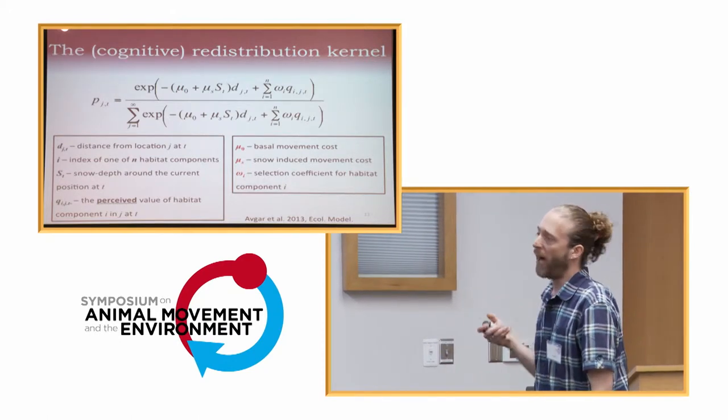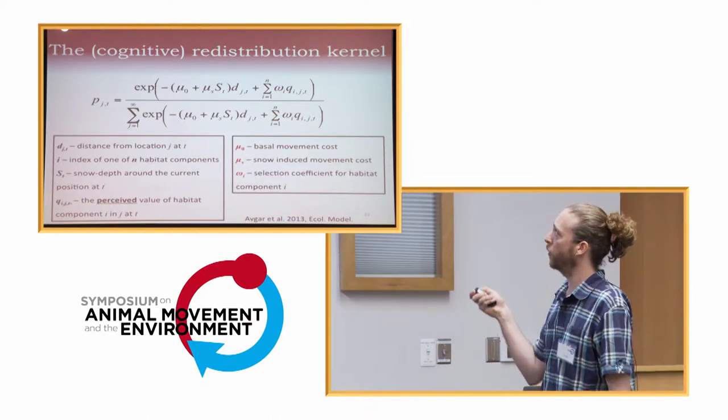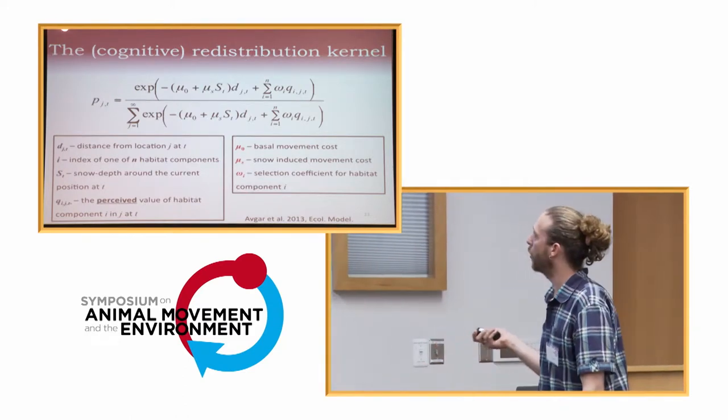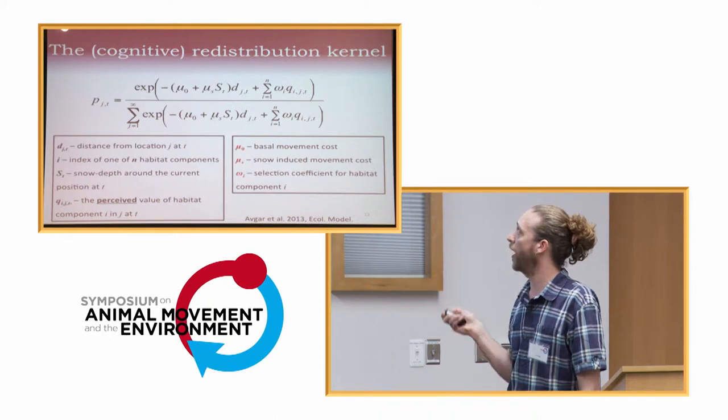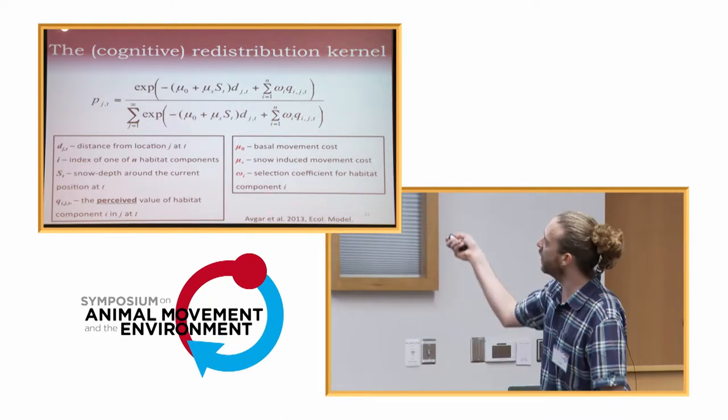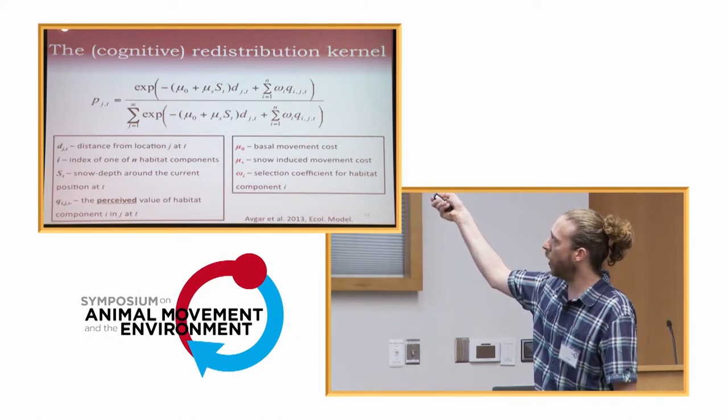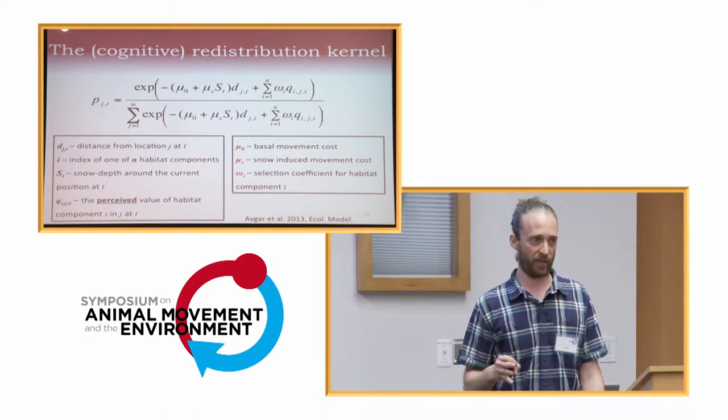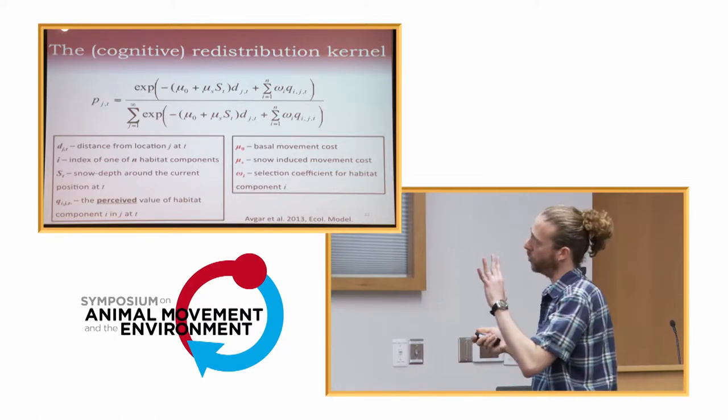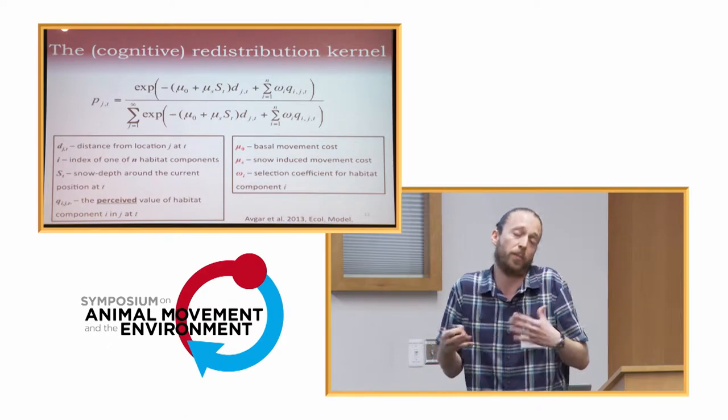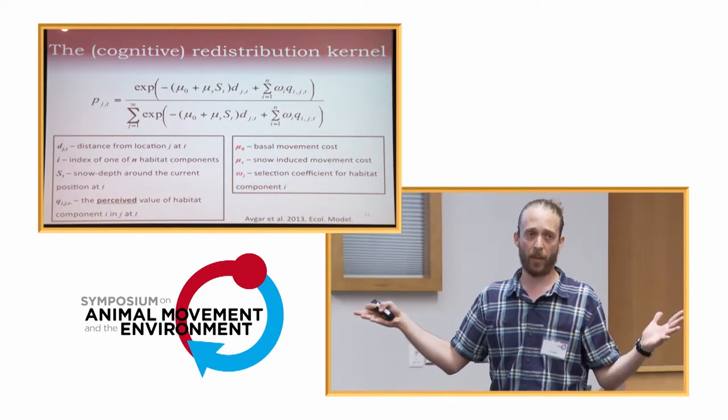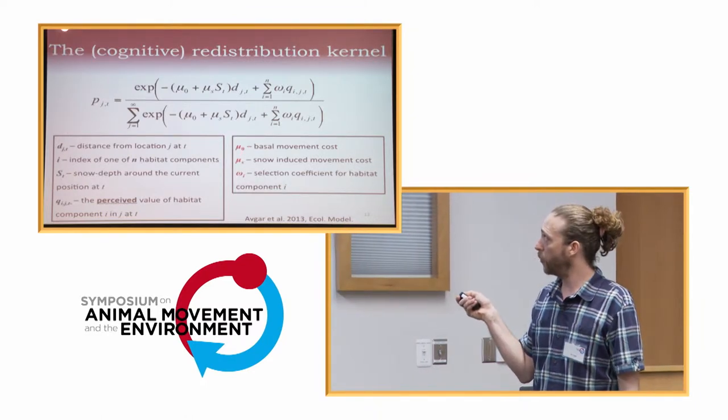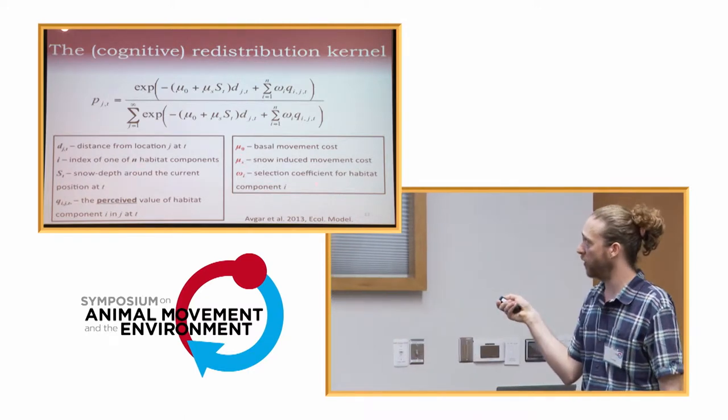And that probability is a function of a non-cognitive or non-resource or non-habitat-related movement kernel, which we think has two main components to it. It has a basal movement capacity. That's a parameter of the model. And it has the snow depth effect. We expect animals to move more slowly through deep snow because of permeability. So this is a physical effect on the animal. And the other component is a resource selection function. But that resource selection function doesn't operate on the habitat as we measure it, as we model it, as we map it, but rather the habitat as we think the animal perceives it.